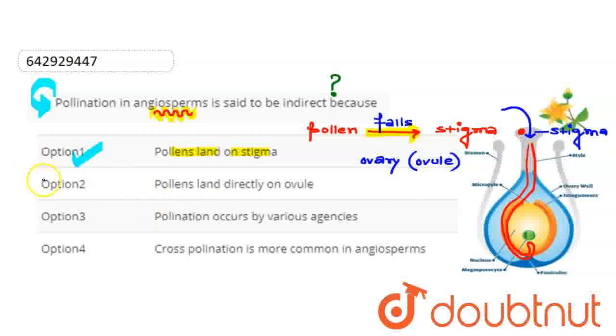Let's see the second option, which is pollen land directly on ovule. This is direct pollination, and direct pollination occurs in gymnosperms.